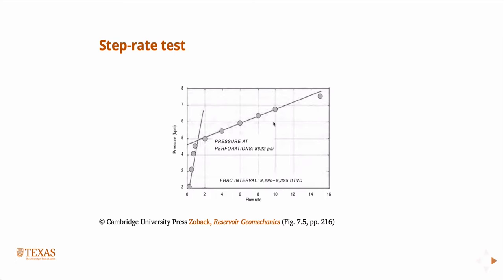In a Step Rate Test, you're actually stepping up the flow rate. You inject at a constant flow rate and record the pressure, then you increase the flow rate and record the pressure. You repeat this process, increasing the flow rate each time and recording the pressure.